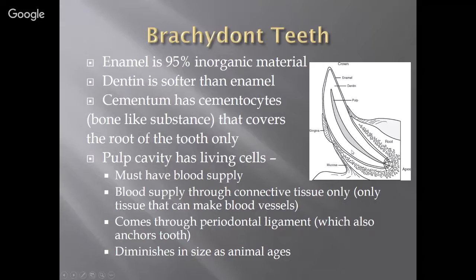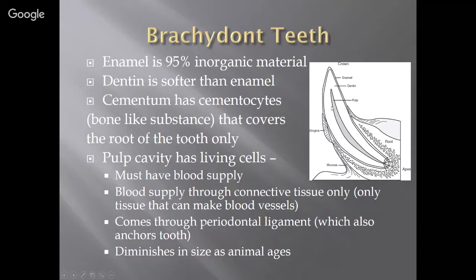The pulp cavity is in the center of the tooth and has living cells within it, so it must have a blood supply. That blood supply comes through connective tissue — the only tissue that can make blood vessels — up through the periodontal ligament, which also anchors the tooth at the tip of the root. This pulp cavity diminishes in size as the animal ages. The enamel is inorganic material — not living — so it does not need to be constantly supplied with blood.